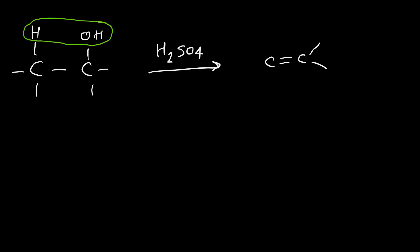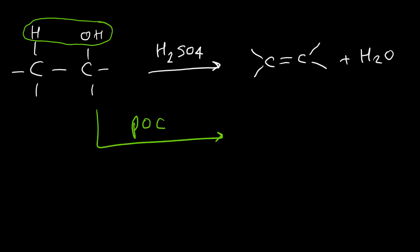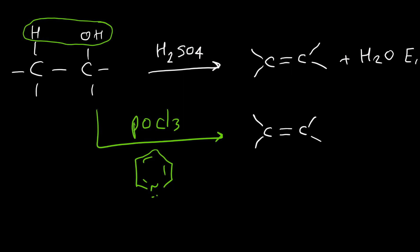The alcohol can produce an alkene. This reaction is called dehydration. In addition to sulfuric acid, we can use another reagent: phosphorus oxychloride in pyridine. Pyridine is a base. The product is an alkene. The mechanism for the first reaction is E1, involving formation of a carbocation, and for the second reaction it is E2.